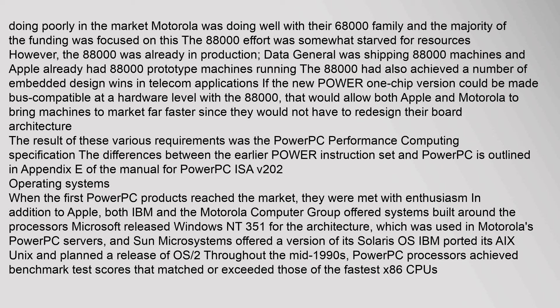The 88000 was already in production — Data General was shipping 88000 machines, and Apple already had 88000 prototype machines running. The 88000 had also achieved a number of embedded design wins in telecom applications. If the new Power one-chip version could be made bus-compatible at a hardware level with the 88000, that would allow both Apple and Motorola to bring machines to market far faster, since they would not have to redesign their board architecture. The result of these various requirements was the PowerPC performance computing specification.